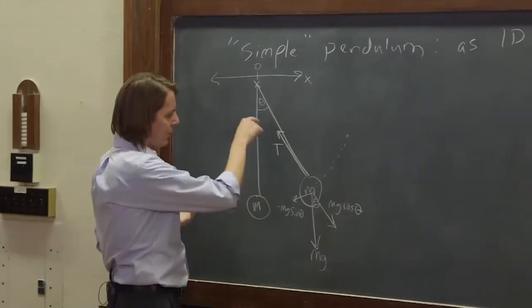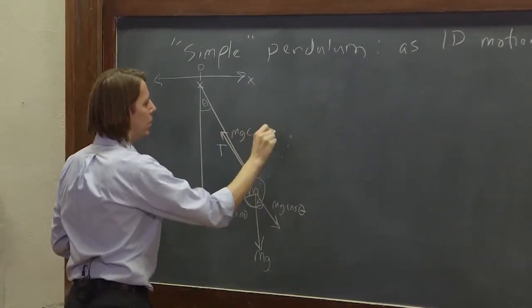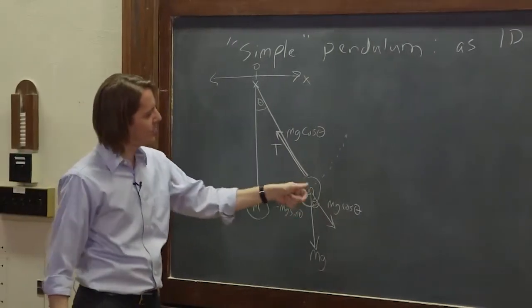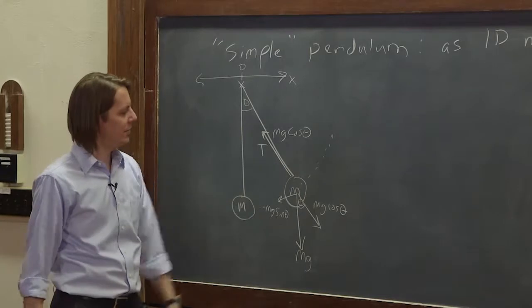So what is the tension equal? Well, the tension is equal to mg cosine theta. Because it pulls this way mg cosine theta, so the tension's that way. That way it doesn't accelerate along here, and it stays on its path.